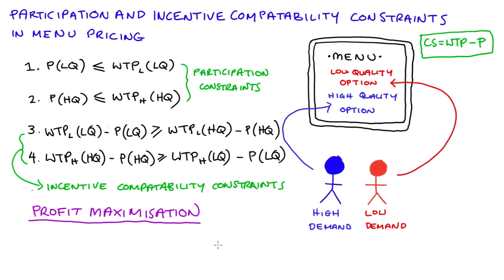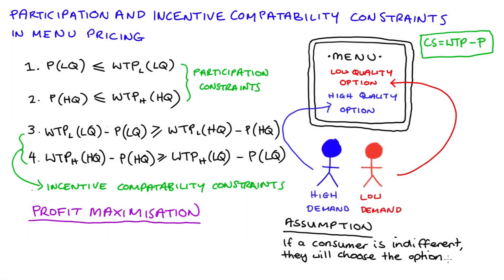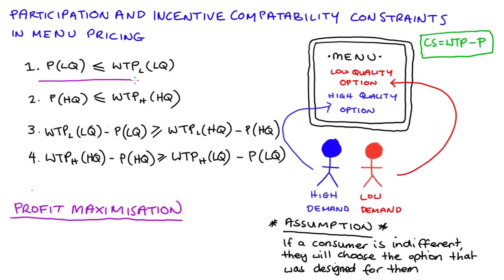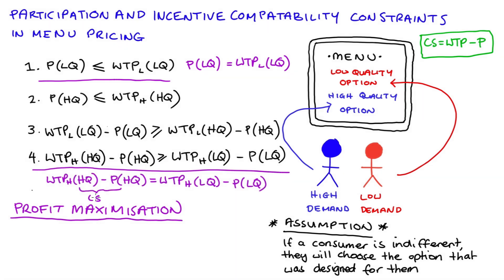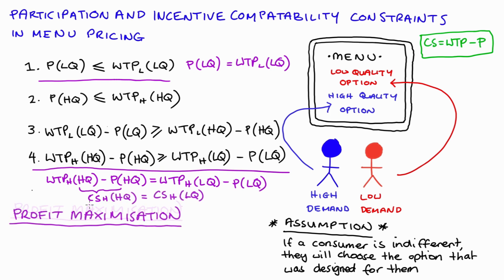The idea of profit maximization given these conditions is: if we have information on the willingness to pay from our different consumer types for the different options, these four conditions are potentially satisfied by a range of prices. What we want is to isolate just the price solutions that give the firm the maximum profit. I'm going to add an assumption: if a consumer is indifferent between two options, they choose the option that's designed for them. This assumption is important because the profit maximizing price solutions are at points of equality — which is technically when a consumer is indifferent between two options.